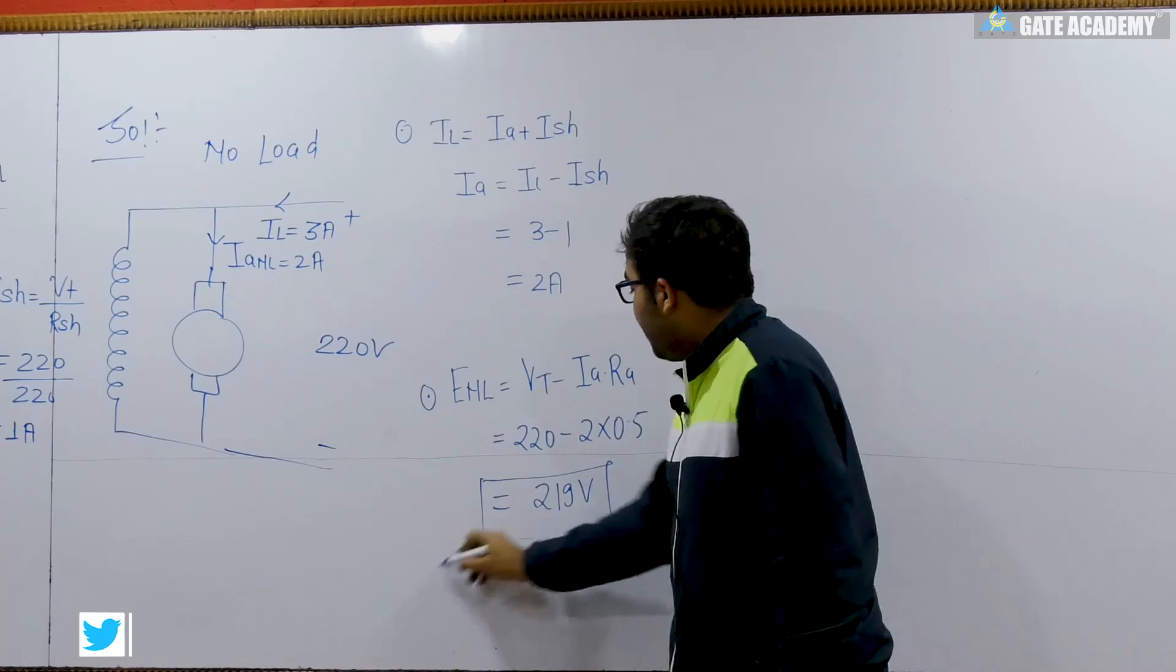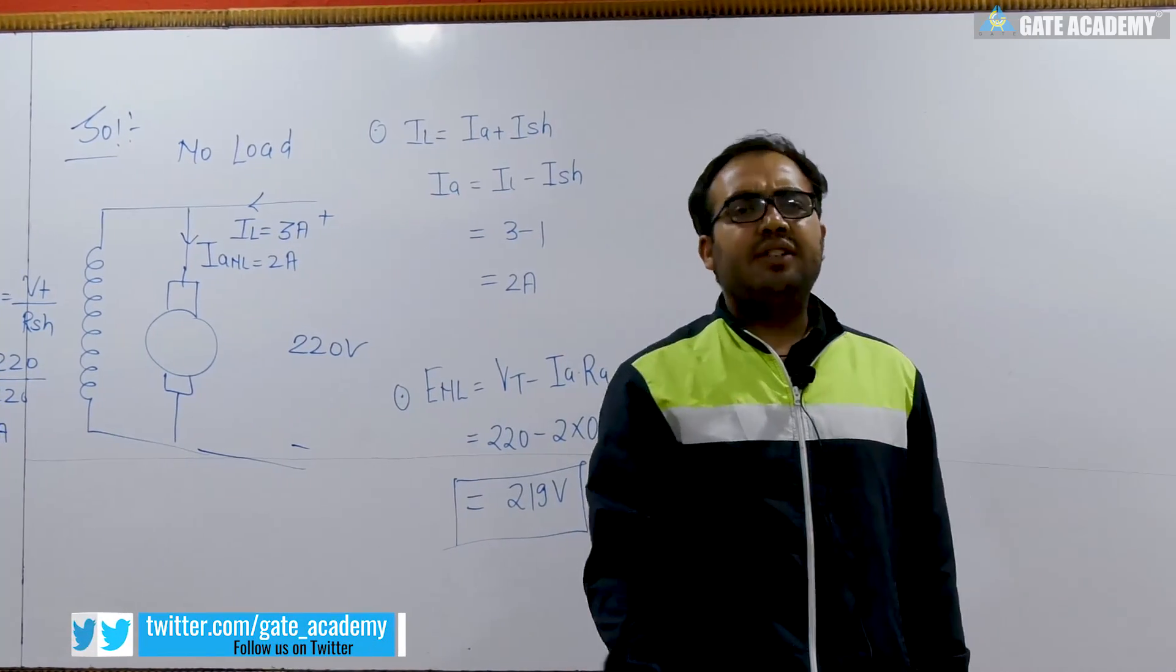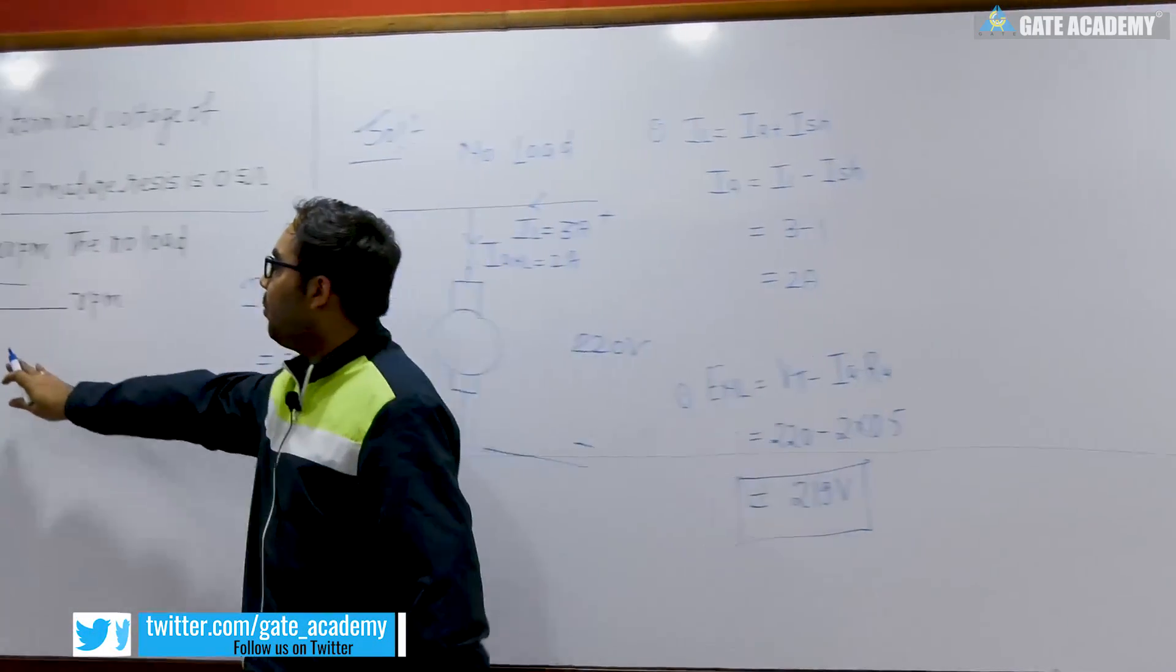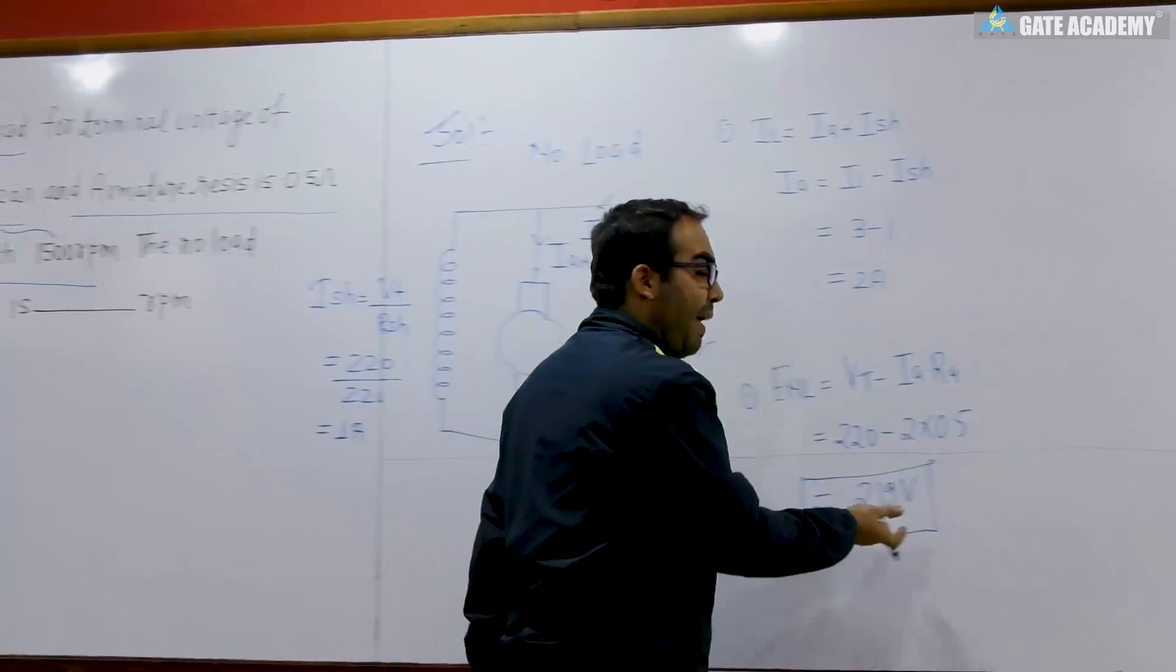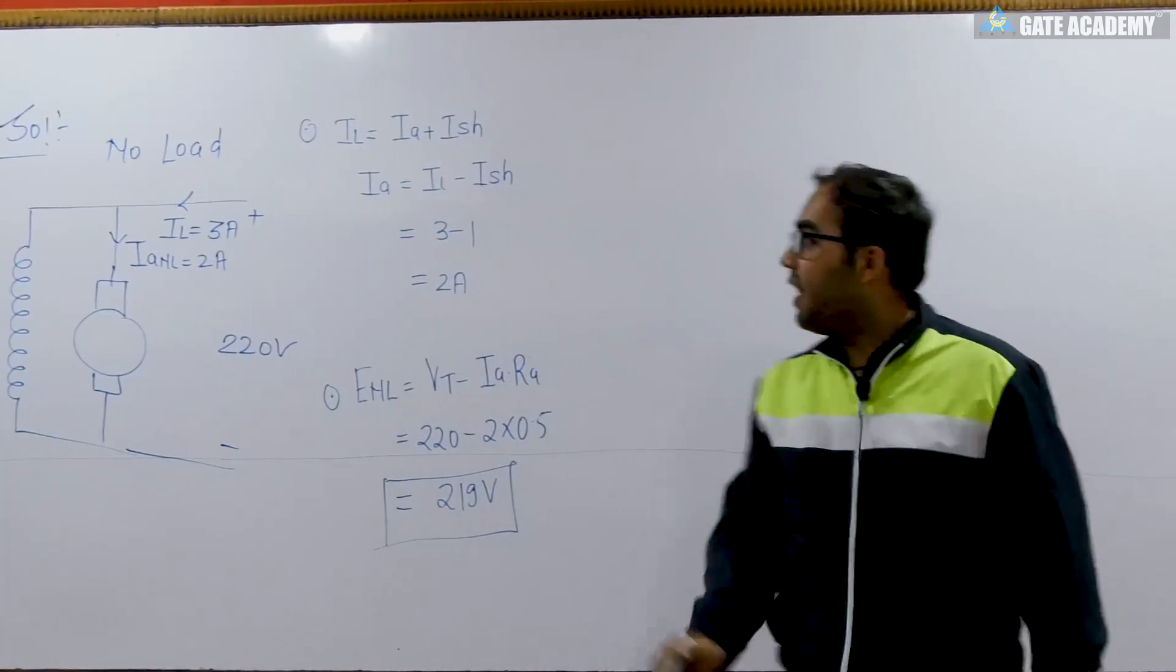So the value of Vt is 220 volt, Ia ki value 2, Ra ki value 0.5, so we are getting 219 volt. So the back EMF for the no load case is 219. When we need speed, we always get back EMF. So back EMF is given. Now we get full load.